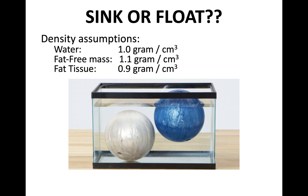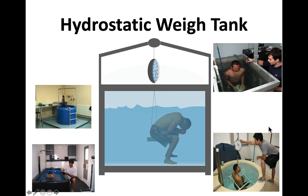Fat tissue, since it is less dense than water at 0.9 g/cm³, would actually float. Fat-free tissue, being denser at 1.1 g/cm³, would sink. So in this case, the blue bowling ball would represent the fat tissue, and the white or cream-colored bowling ball would represent the fat-free mass. With underwater weighing, we take someone's mass outside and then weigh them under the water to help determine their volume.